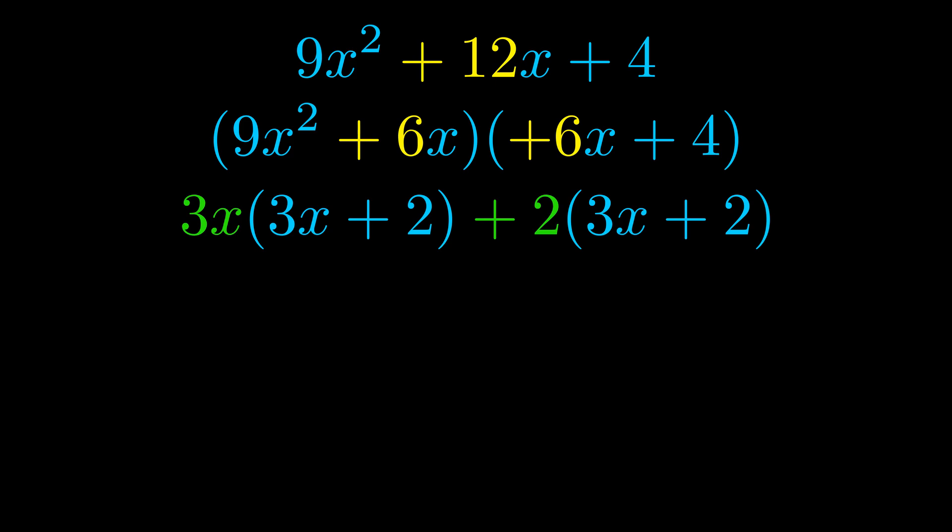Notice also how what remains inside of the parentheses is the same in both cases. The blue values are the same. Those blue values will become one of our factors and we will combine the two green values, the GCFs that we pulled out, to get the other one. And that is our fully factored equation.